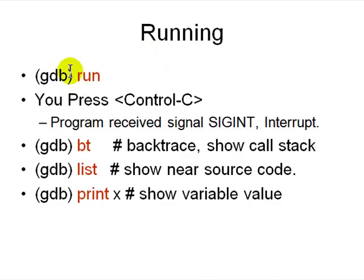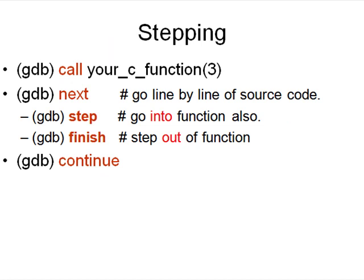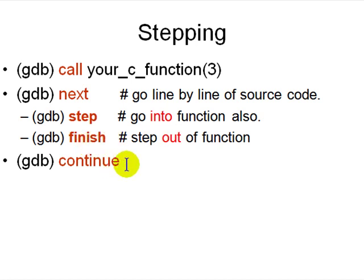Once everything is ready, you run the program. If you want to stop it you press Ctrl+C. You can then examine the state — the backtrace list will show you the source code near where it stopped. Use print x to print a variable. Step through code line by line with next; press Enter to repeat the last command. Use step to go inside a function, finish to exit it, and continue to run until the next breakpoint.